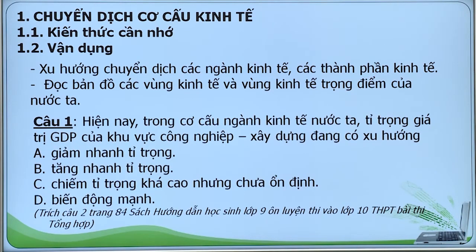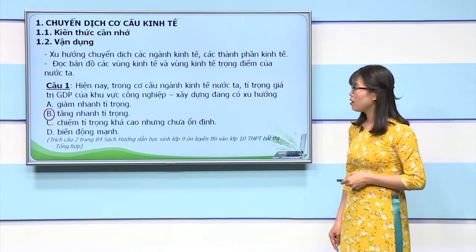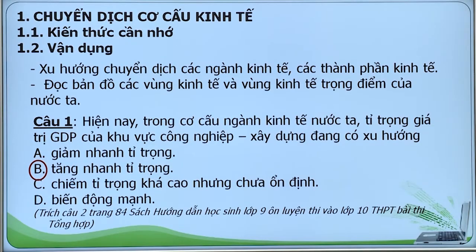Câu 1: Hiện nay trong cơ cấu ngành kinh tế nước ta, tỉ trọng giá trị GDP của khu vực công nghiệp xây dựng đang có xu hướng: A. Giảm nhanh tỉ trọng; B. Tăng nhanh tỉ trọng; C. Chiếm tỉ trọng khá cao nhưng chưa ổn định; D. Biến động mạnh. Câu này chúng ta dễ dàng tìm ra câu trả lời, đó là phương án B: Tăng nhanh tỉ trọng.